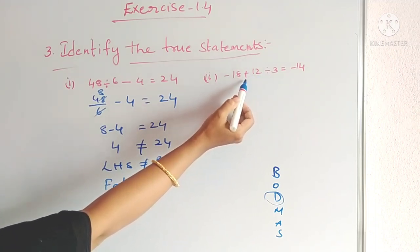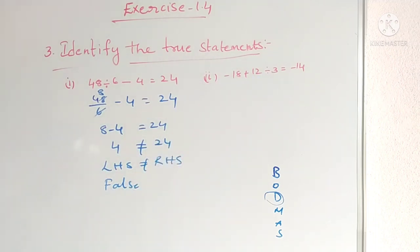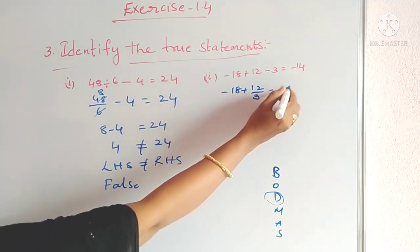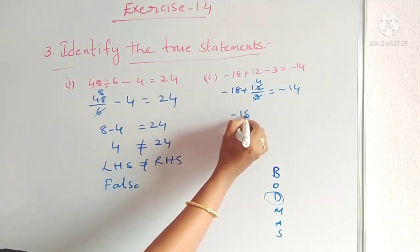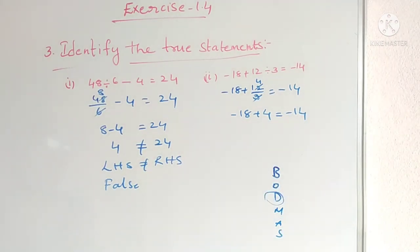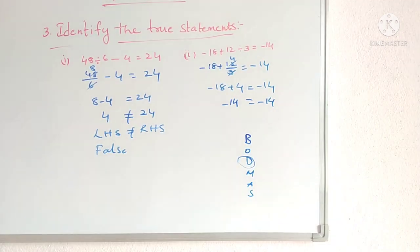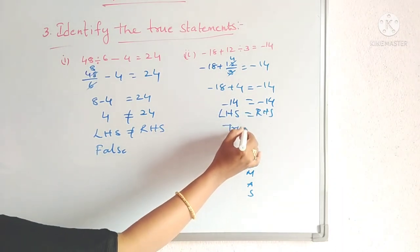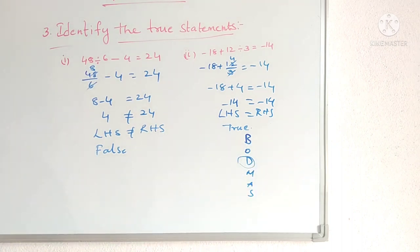Second statement: −18 + 12 ÷ 3 = −14. Division, addition, and subtraction. First division: 12 ÷ 3 = 4. So −18 + 4: subtract small from big, 18 − 4 = 14, and before the big number is minus, so −14. LHS = −14 = RHS. This is TRUE.